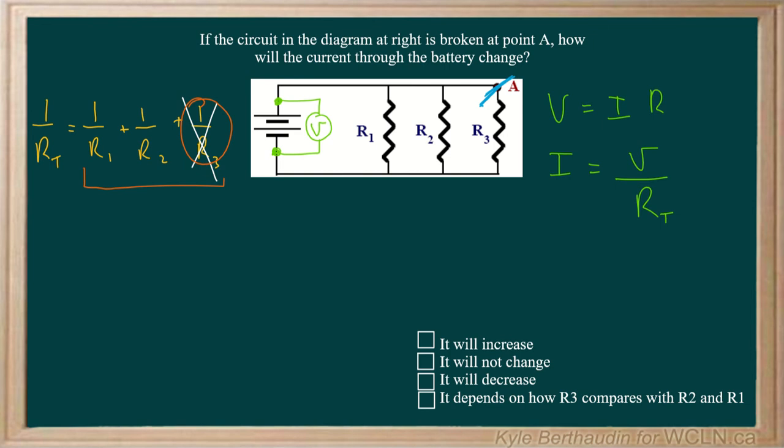And what that's going to do is when we solve for RT, and we actually put it in the numerator instead of the denominator, RT is actually going to change. How?